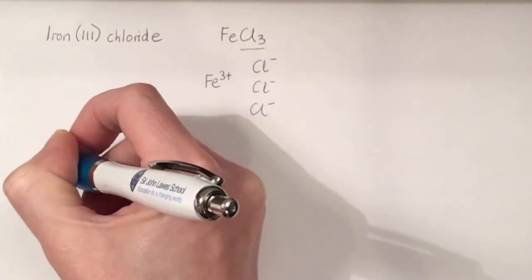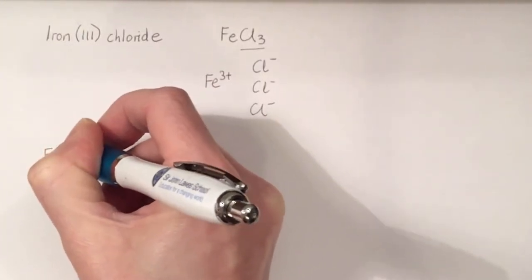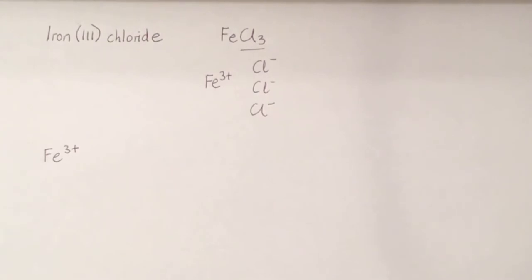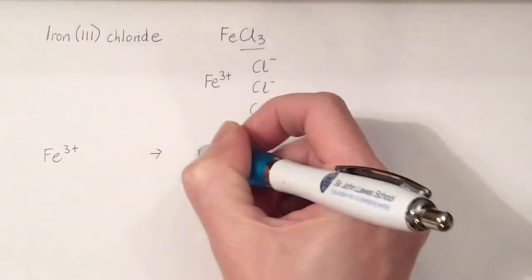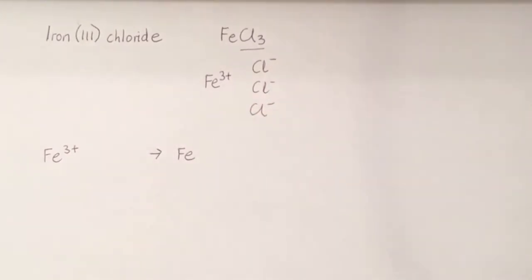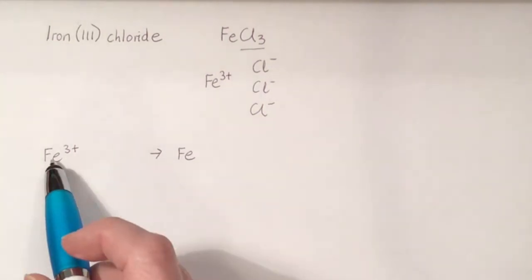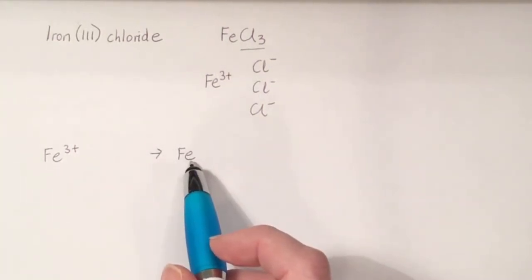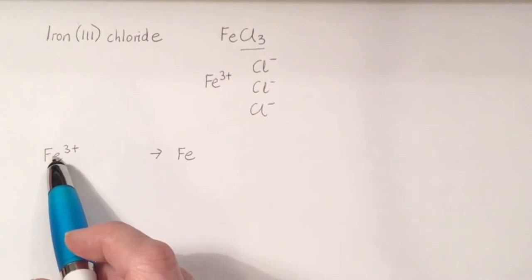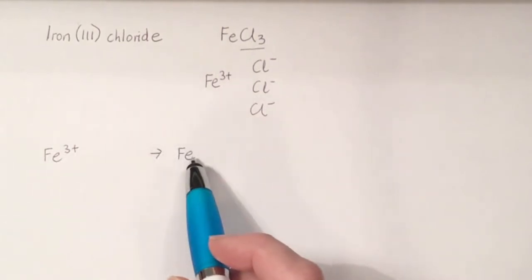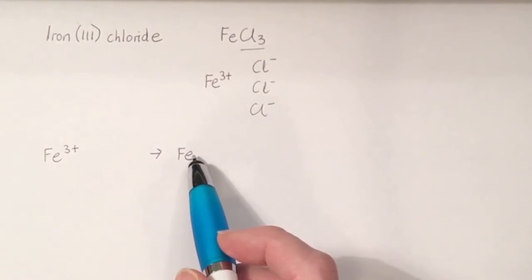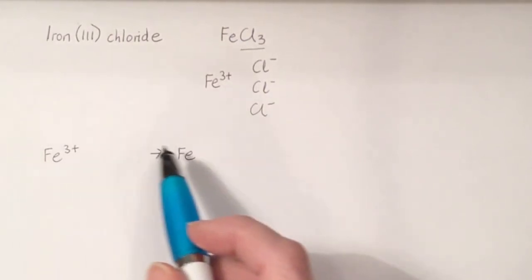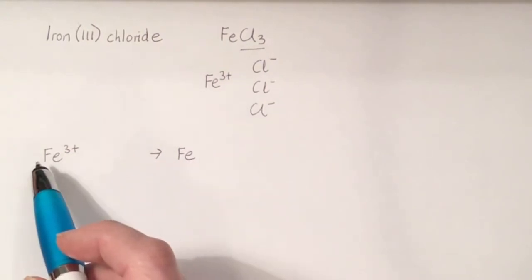So our iron three plus, when it gets to the negative electrode, it accepts some electrons and turns into iron. So we get the metal at the negative electrode. We've gone from iron three plus to iron. We've therefore gone more negative in charge because we've gone from three plus to zero. And if we've got more negative, that means we must have got more electrons.